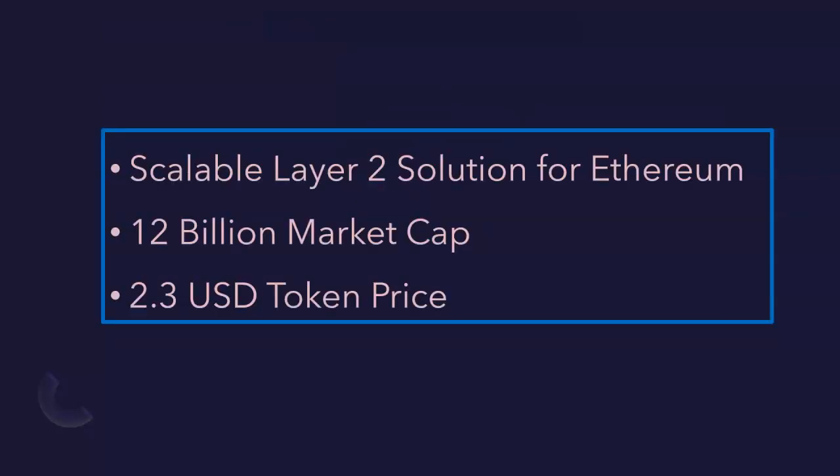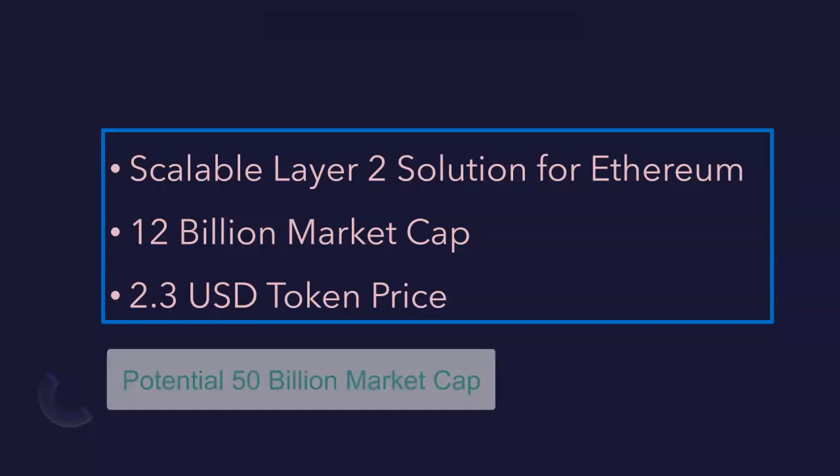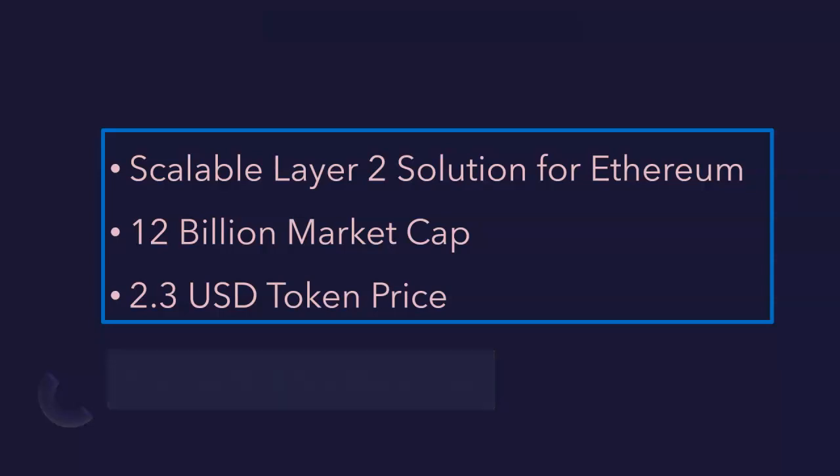As I mentioned before, Polygon is a Layer 2 scalable solution for Ethereum — this is only for Ethereum. If you're not a big fan of Ethereum that may not attract you. But you need to understand that Ethereum is the early mover in the smart chain world and is just behind Bitcoin. Ethereum is absolutely the platform for Layer 2 scalable solutions, and a lot of institutional investors have invested on and are working on the platform. The current market cap for Polygon is $12 billion.